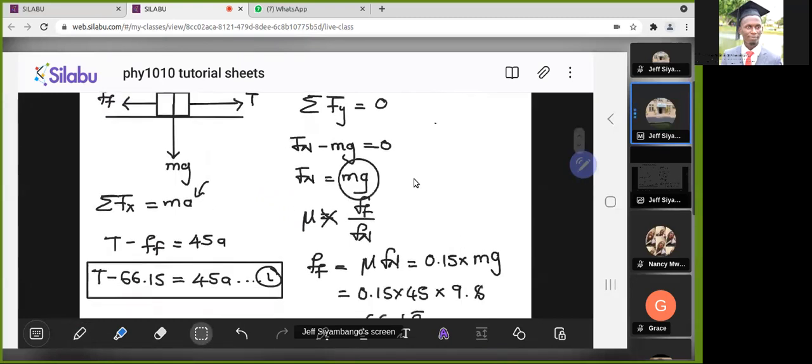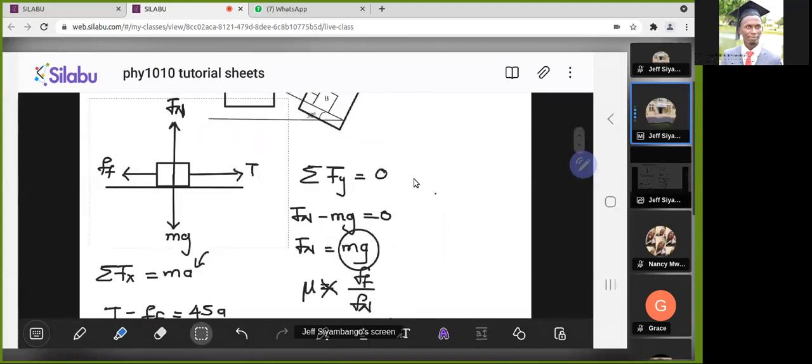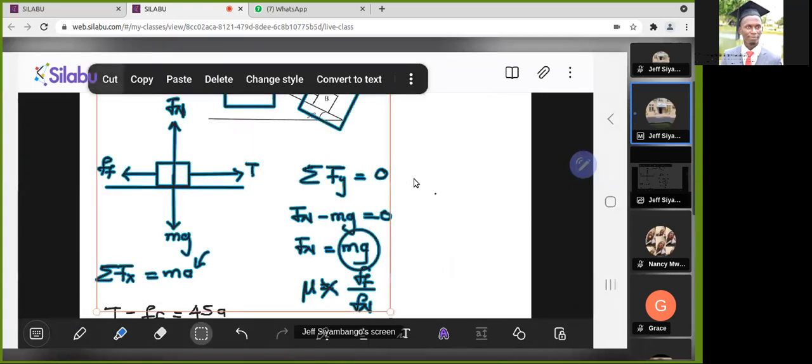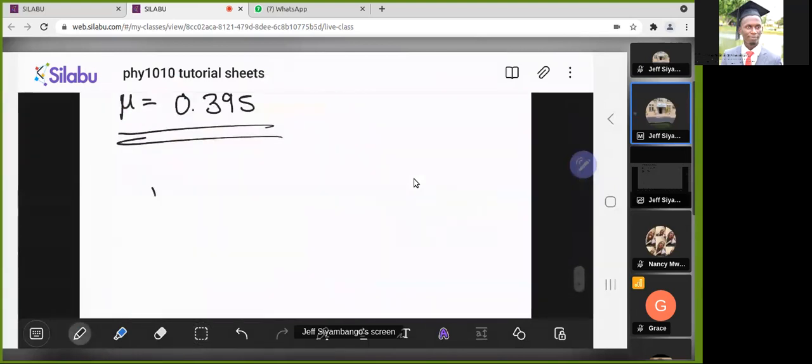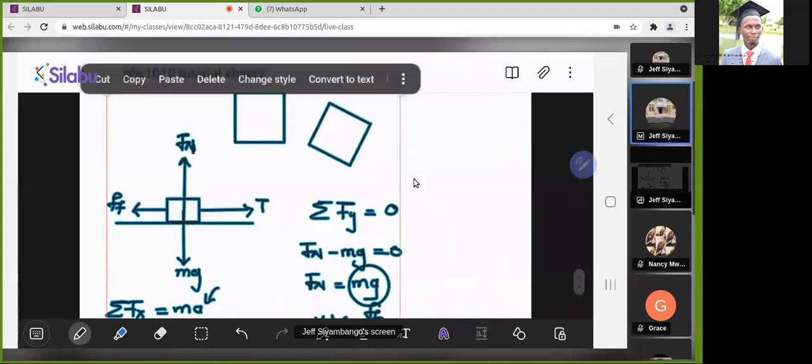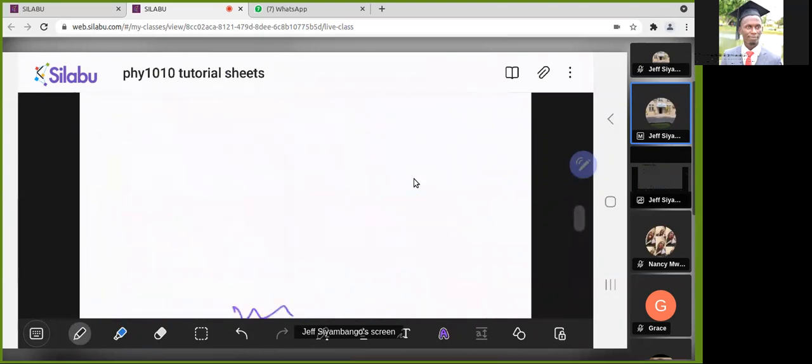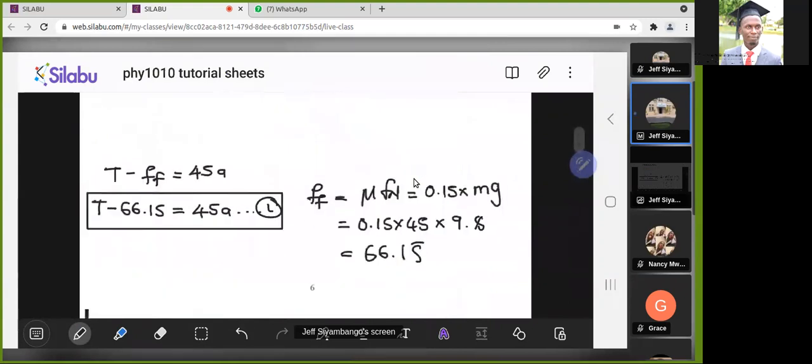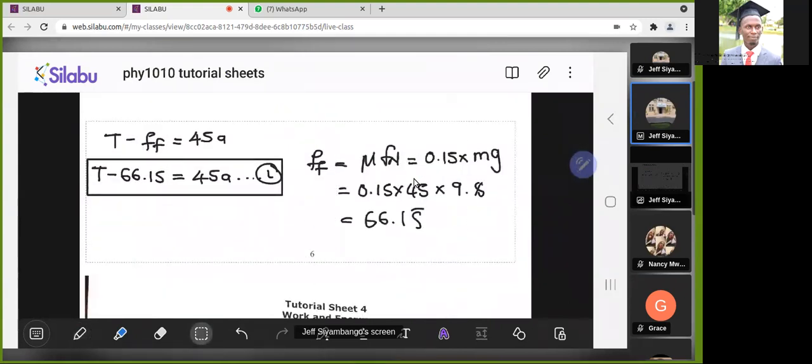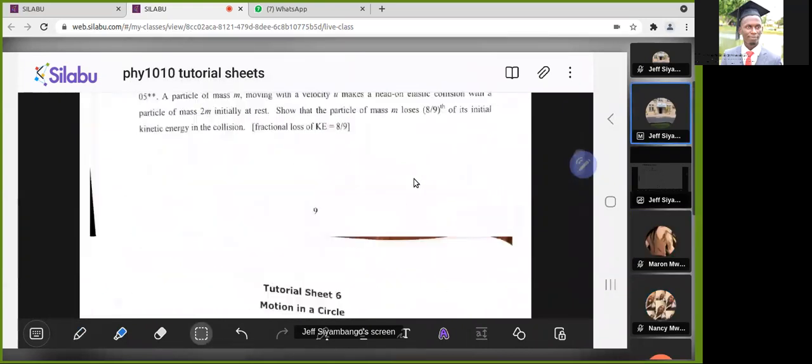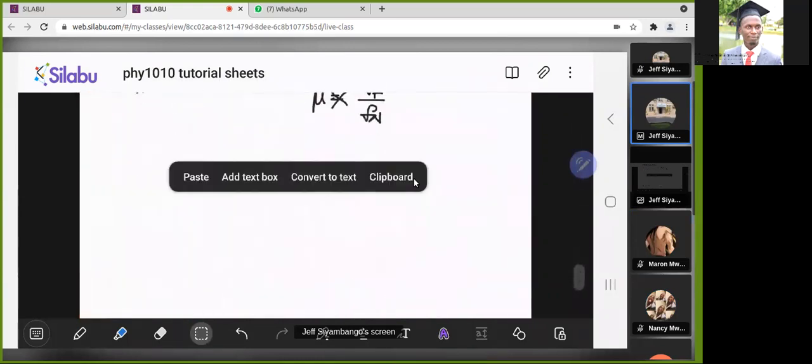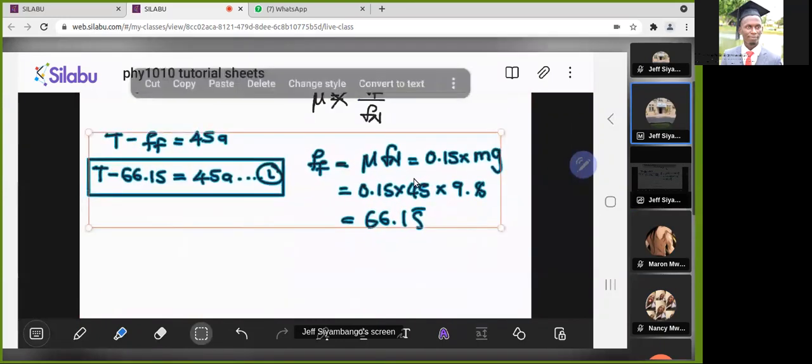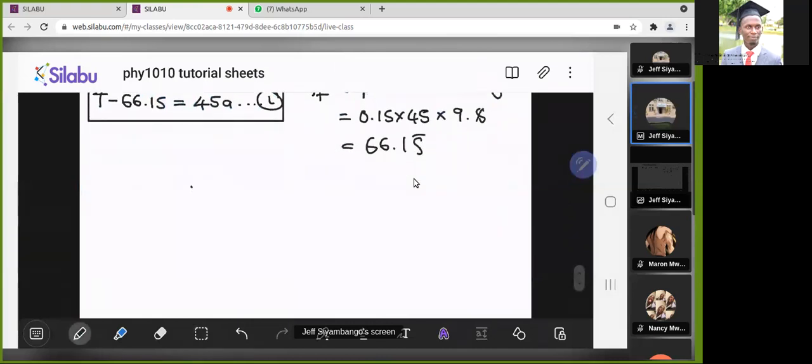We now want to go to the second part, the second diagram. We've done everything we can for that first part. We now want to move on and look at that second part for the box labeled B. Let me take this to the far end. Any questions so far as I shift my work to the other side?